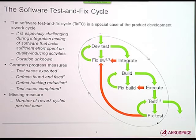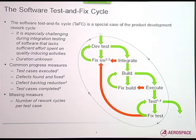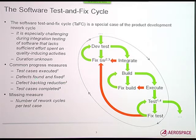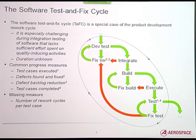We modeled it and determined how much longer it was going to take. A lot of times the metrics being used — test cases executed, the number of defects found and fixed, defect backlog reduction, and test cases completed — are spot metrics. They identify what's going on at a particular spot in the process, but they don't capture the dynamics of the whole process. So we look to the number of rework cycles per test case.